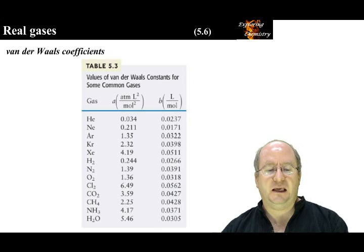Looking at B, the smallest B is for neon. The largest B is for chlorine. B is the volume occupied by one mole of gas, and the values follow the expected trend related to the size of the atoms and molecules presented here.